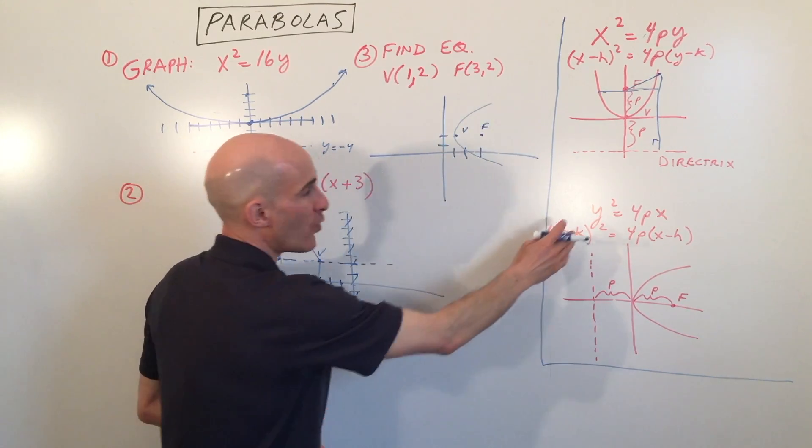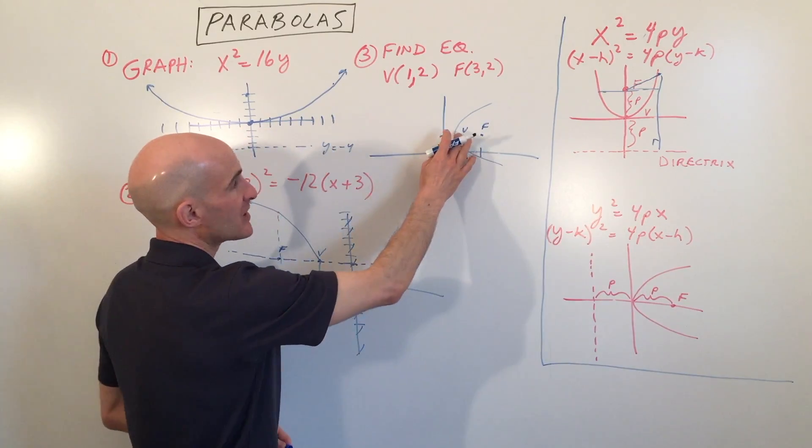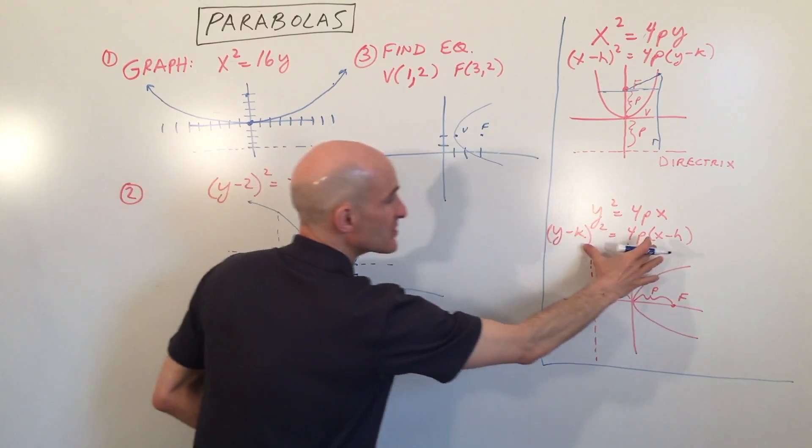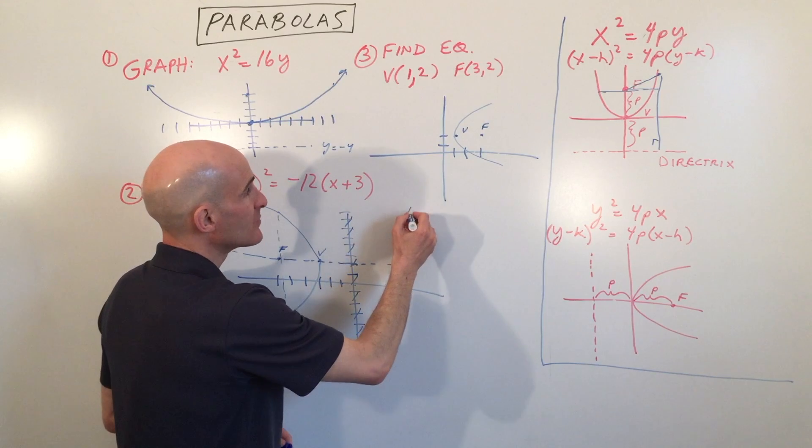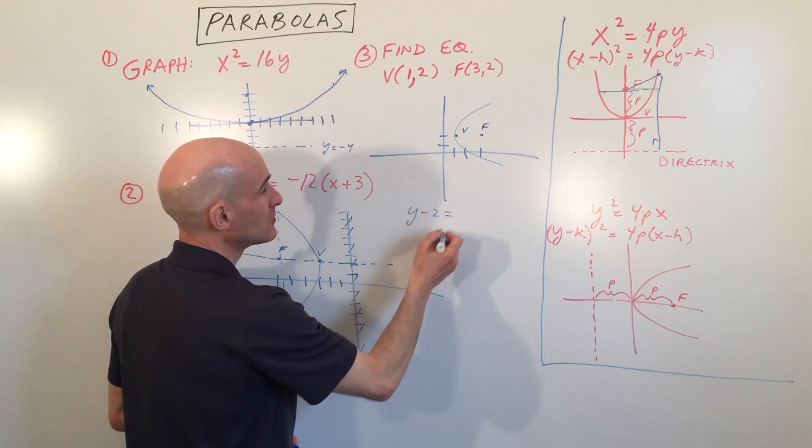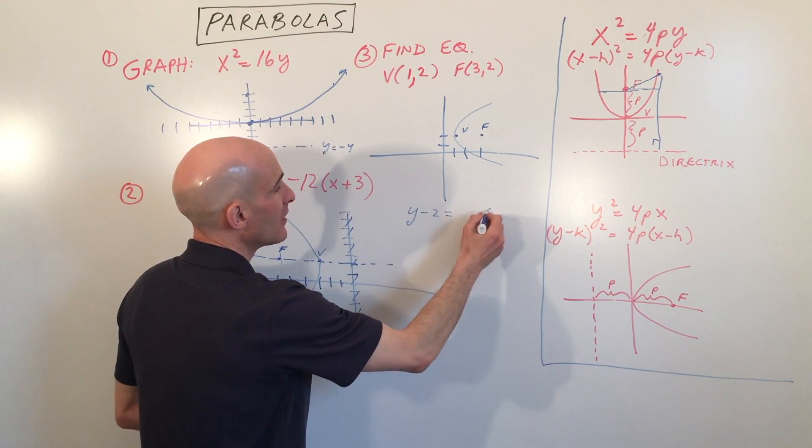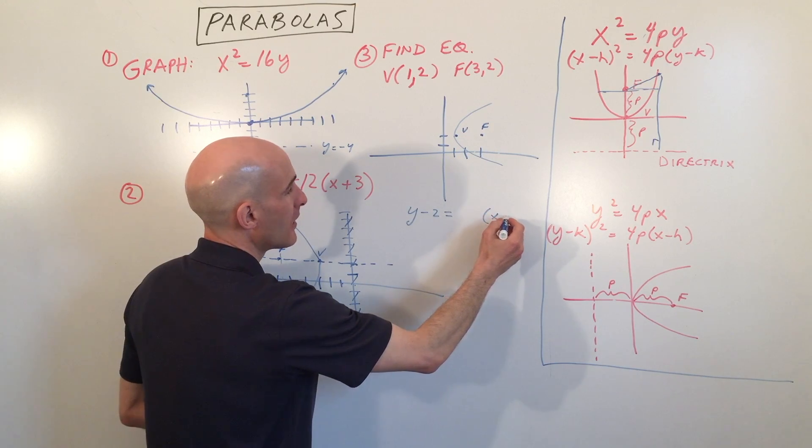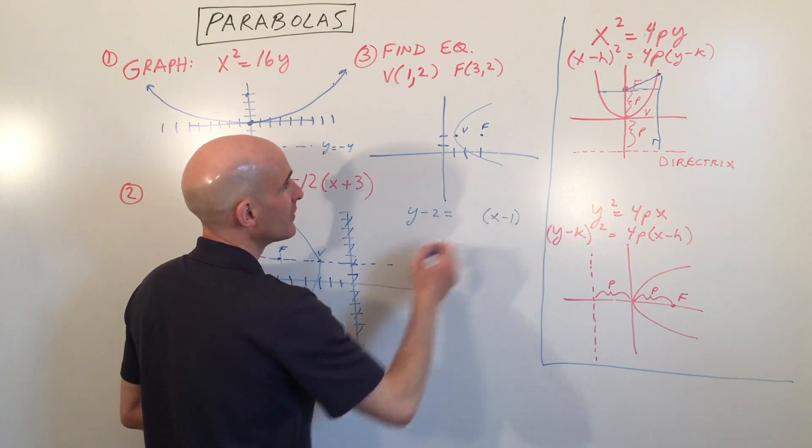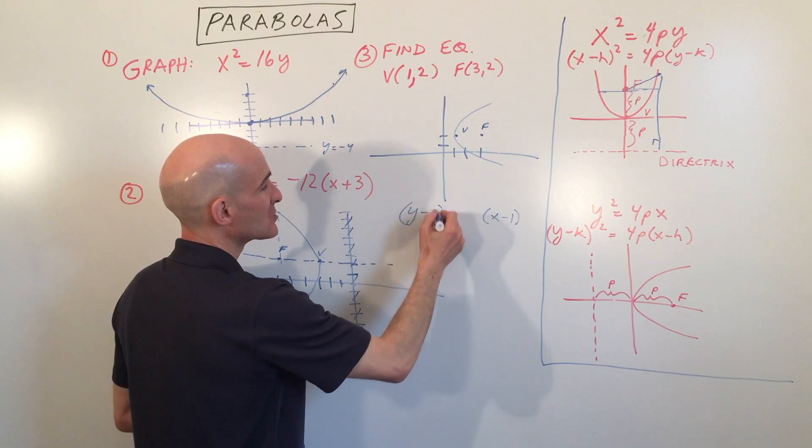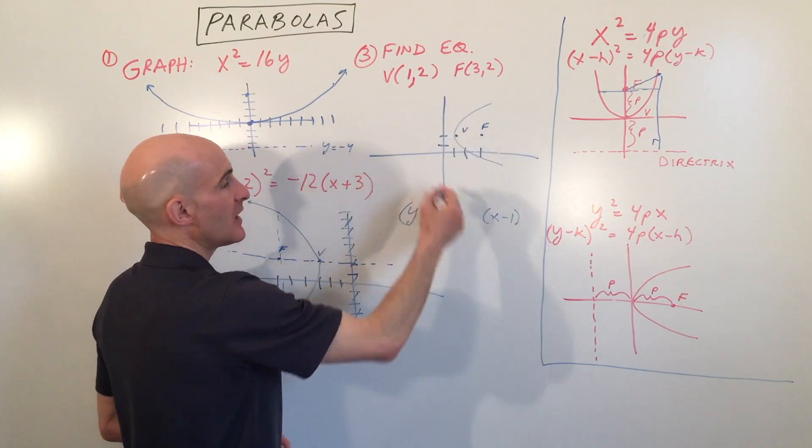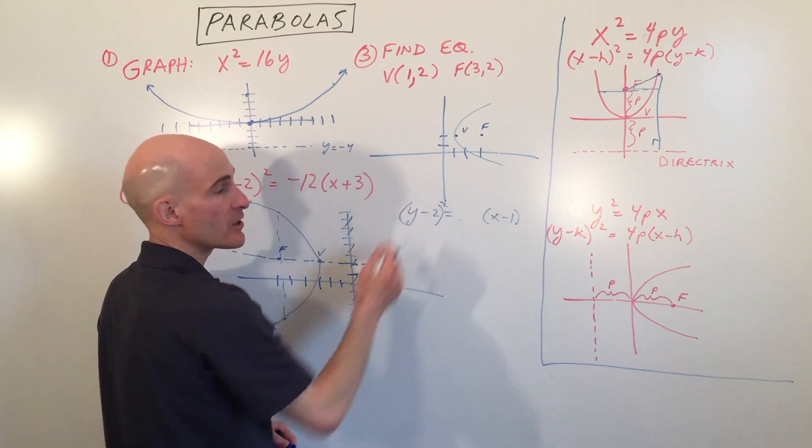Since it's opening to the right, it's a y² variety. The vertex is at (1, 2). So we're going to be using this form right here. So it's going to be (y - 2)² equals x minus 1.